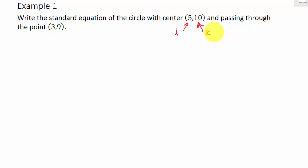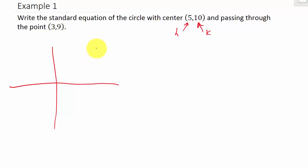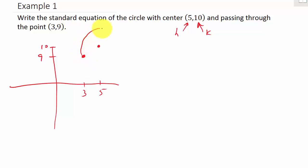To find the radius, let's look at a quick sketch. Let's plot the points — this is (5, 10) and this is the point (3, 9). So 3, 9, 10, and 5 are marked. This is the center and this is a point on the circle. The circle passes through this point and looks something like this.